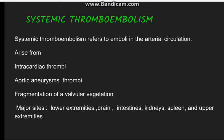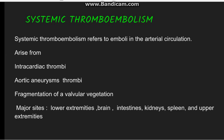Now going to another type: systemic thromboembolism. Systemic thromboembolism arises from emboli present in the arterial circulation or from a cardiac origin — it arises from intracardiac thrombi, from aortic aneurysms, or from valvular vegetations. These can get detached, enter into the systemic circulation, and then be deposited into the lower limbs, brain, intestines, or kidneys.